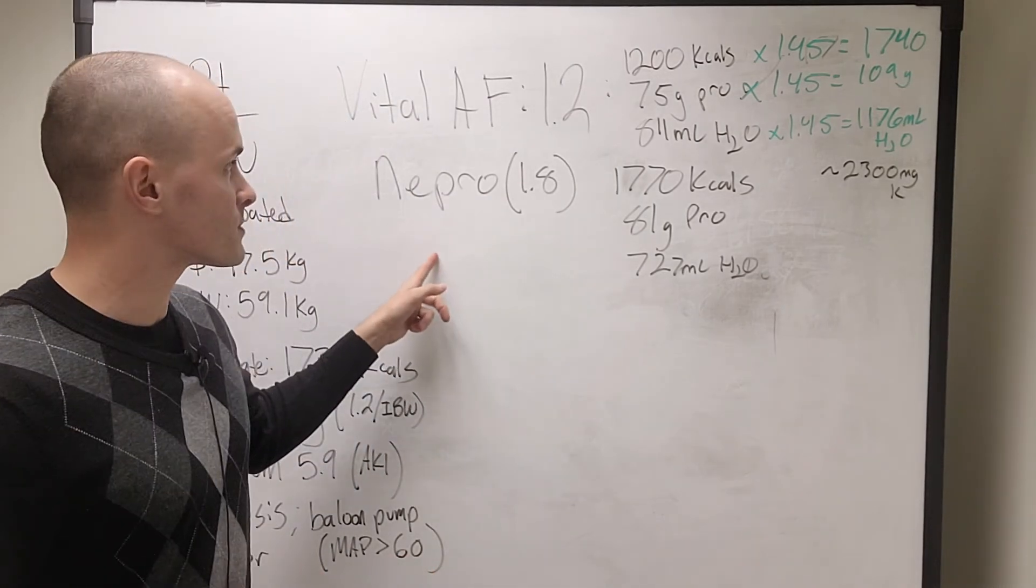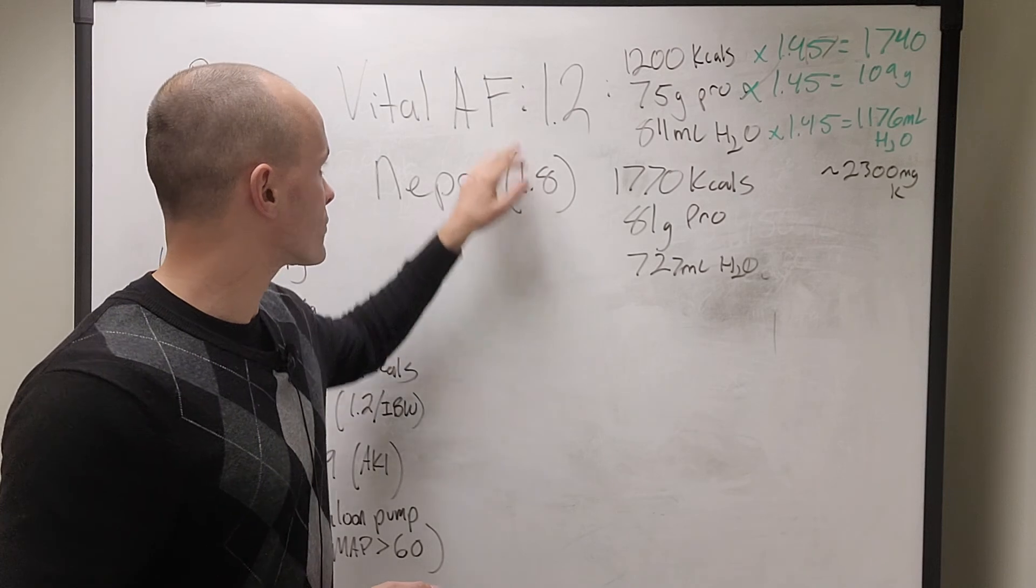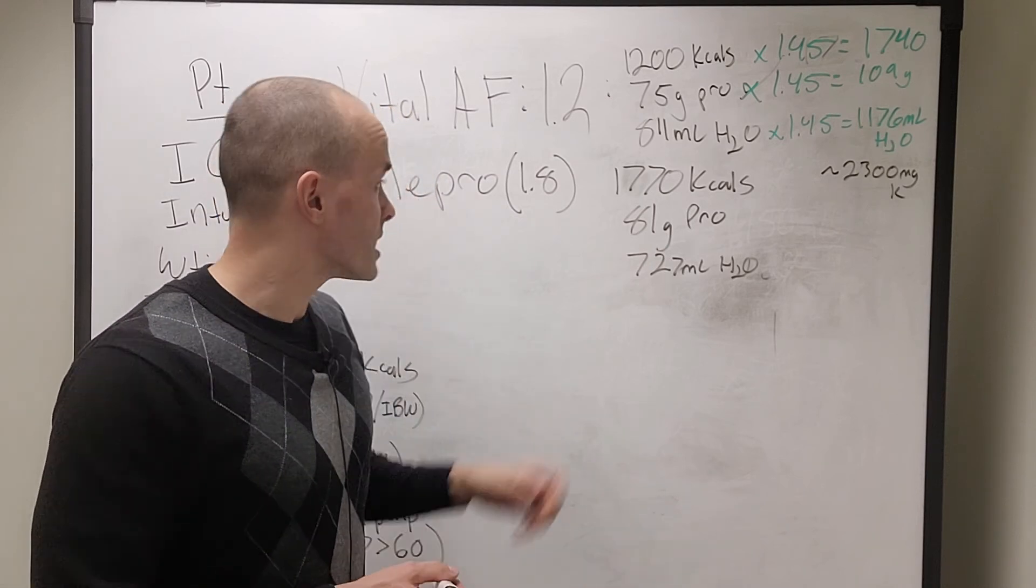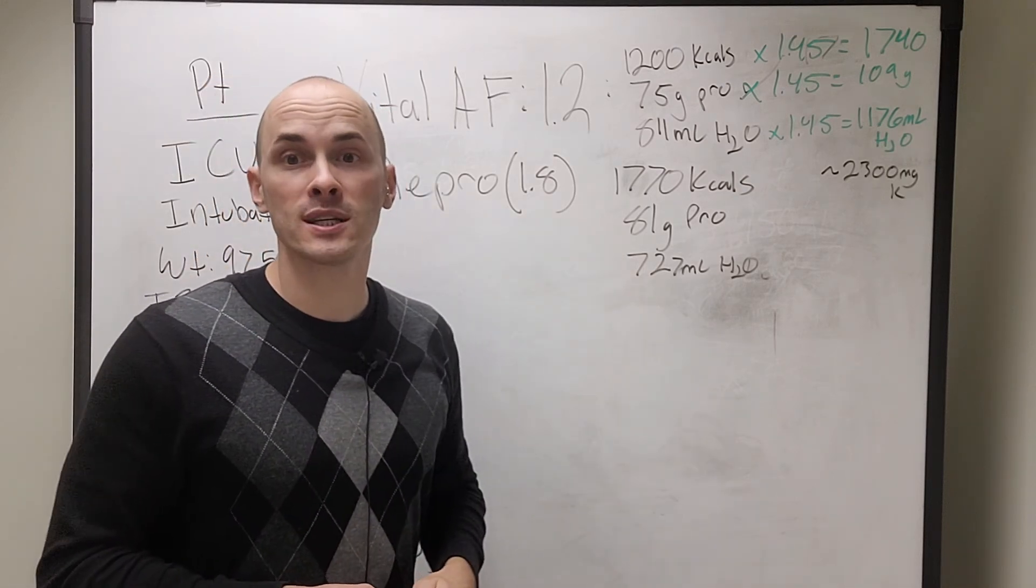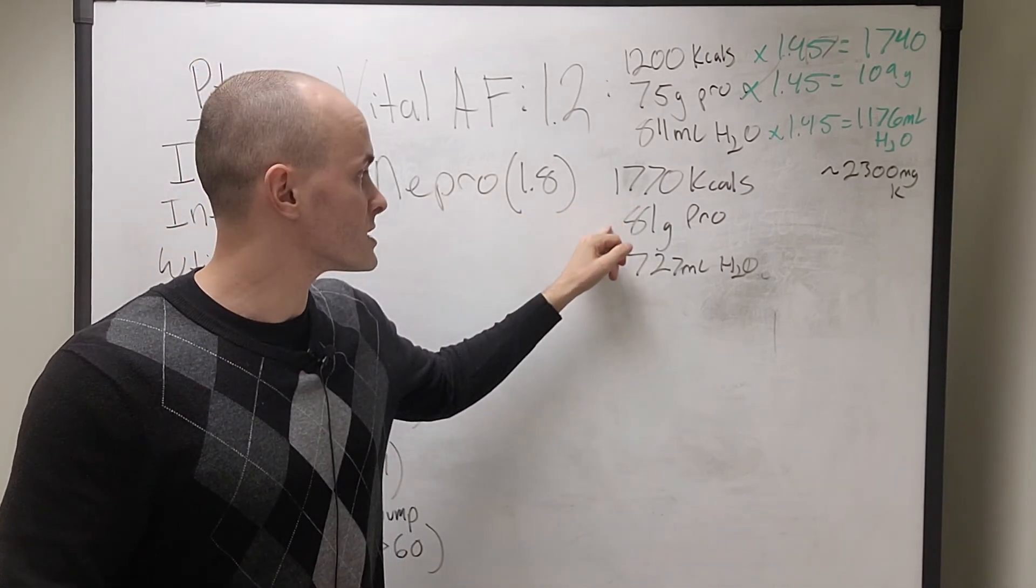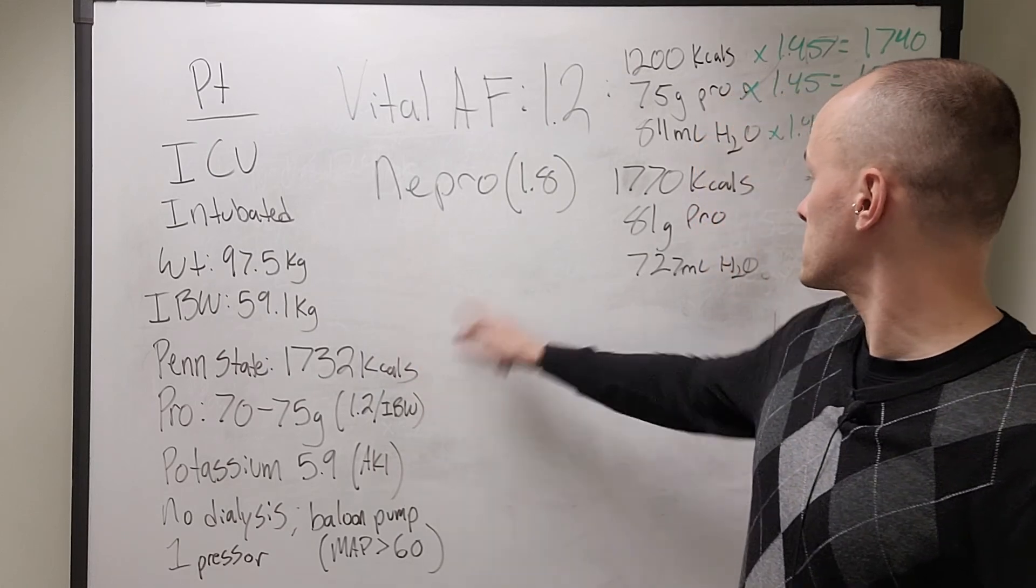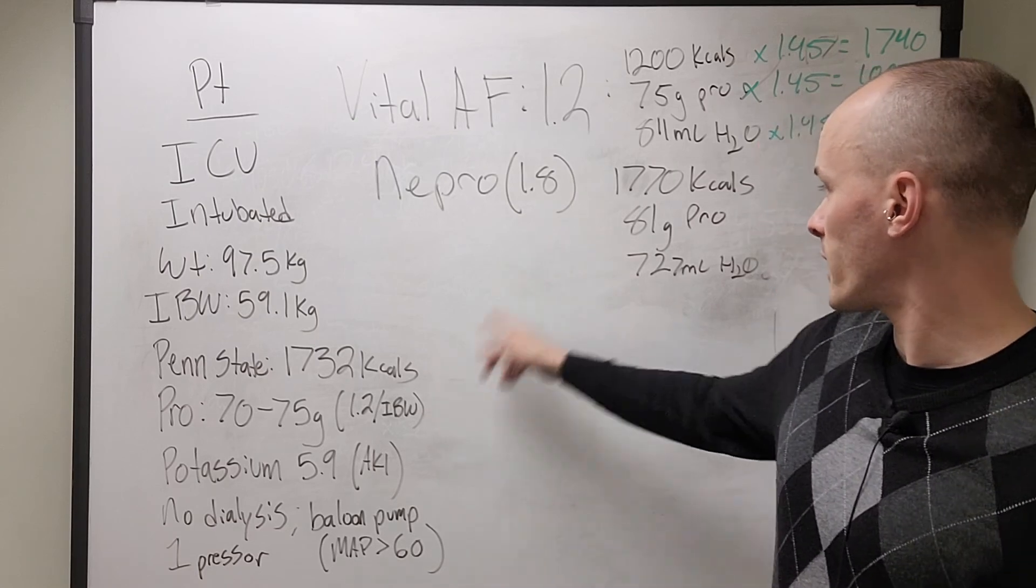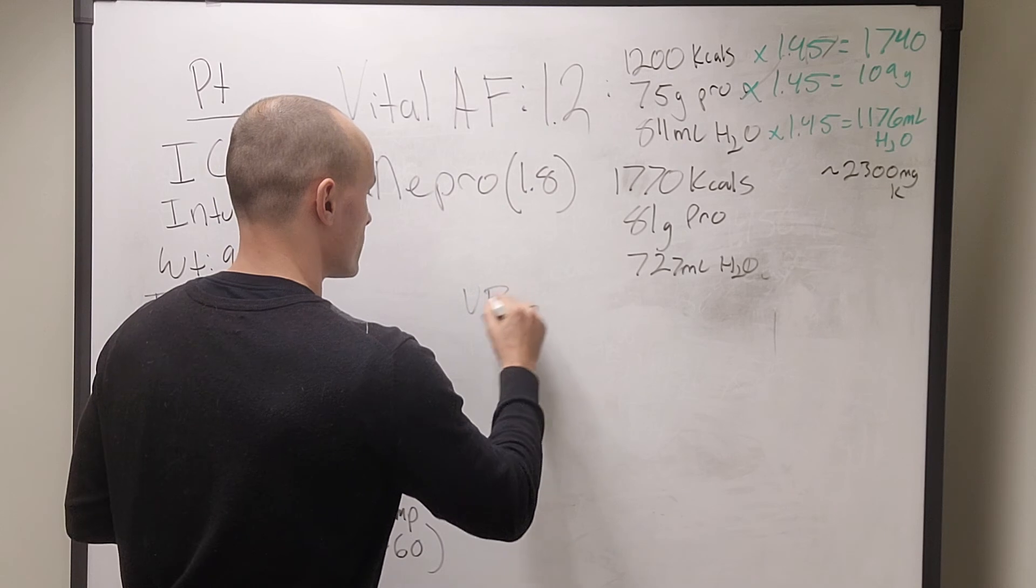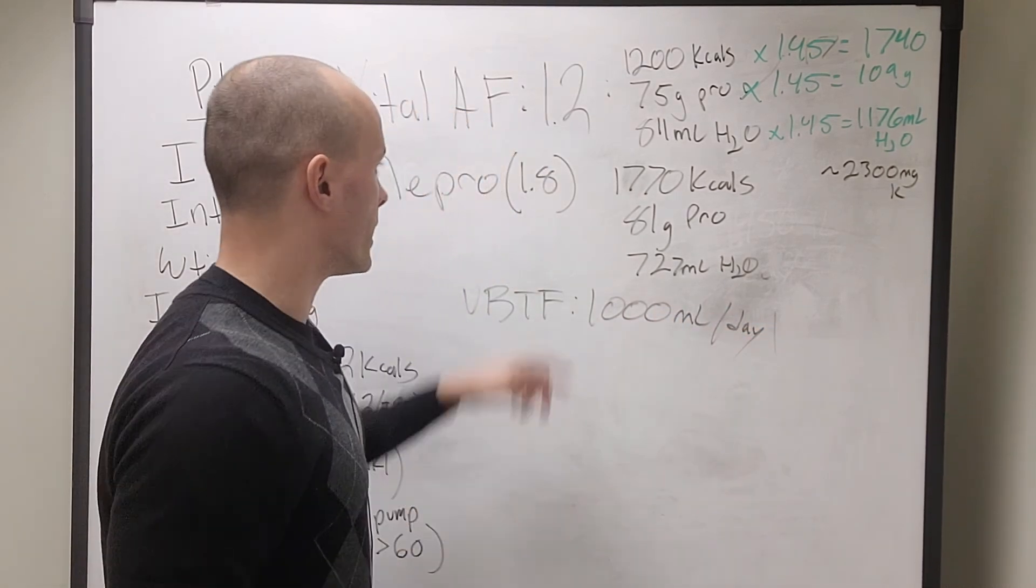Looking at Nepro, this is a renal specific formula. It's going to be a higher concentration because typically with dialysis, they're taking fluid off the patient. And so you don't want to be fluid overloading them with a lower concentration formula. So Nepro is going to be a higher concentration formula, which means it has more calories. It's got quite a bit of protein too, but it's certainly not as high in protein as some of the other ICU specific formulas. Interestingly enough, one liter of Nepro gives 1770 calories, 81 grams of protein, which is exactly what our hypothetical patient here needs. So 1732, 1770, and then 75 grams of protein, 81 grams of protein, nearly identical. So the nice thing about this is the math is already done for us. If we're going to do a volume based tube feeding with Nepro, they'll just get 1000 milliliters per day. And this is what it'll provide.